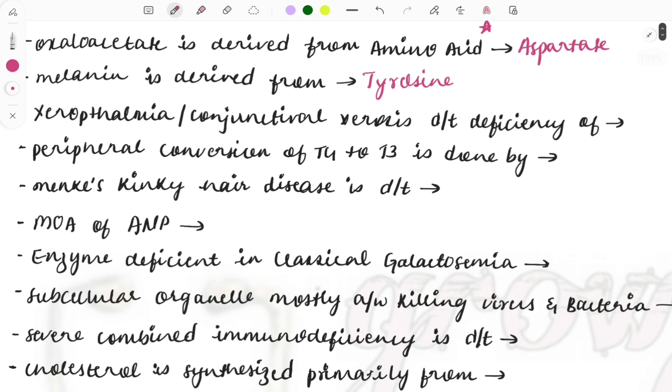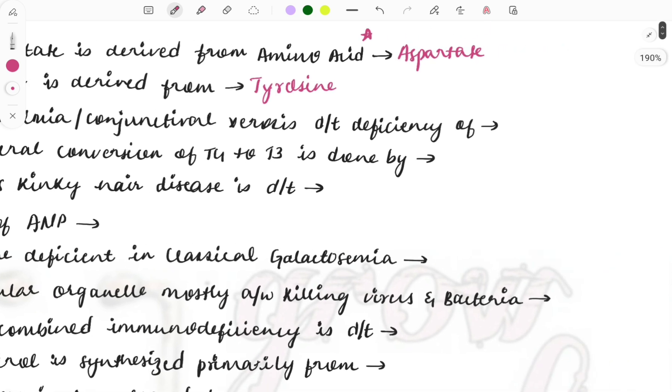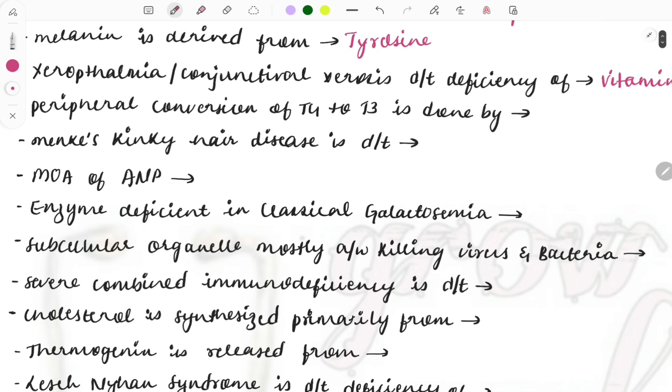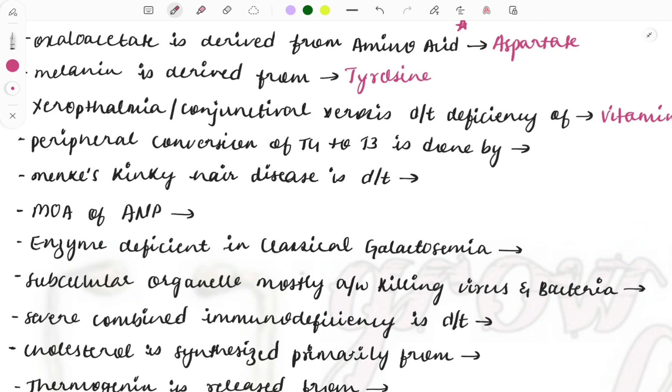Next question: xerophthalmia or conjunctival xerosis occurs due to deficiency of which vitamin? It is vitamin A. Vitamin deficiencies and the functions of vitamins, again a repeat topic. Note it down - vitamins is a must do from biochemistry. You will surely be getting three or four marks easily if you do the vitamins.